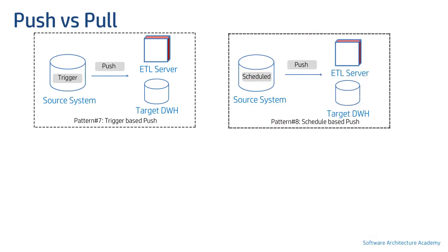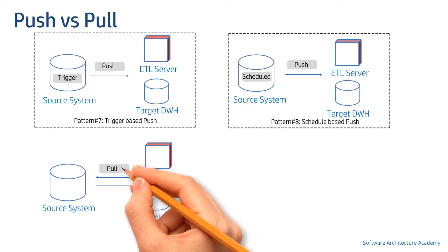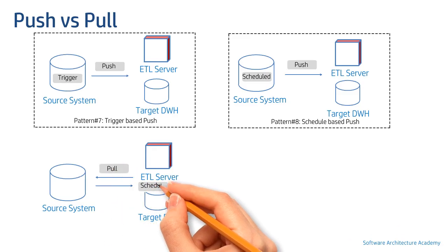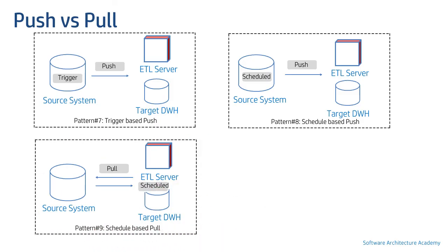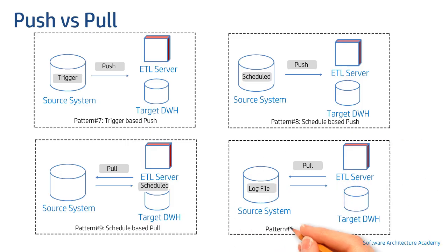A pull is initiated from the ETL server or a target data warehouse. It can be initiated by two means: first, scheduled as per the previous example, and second, based on log file tailing. In this pattern, a process tails a log file located on a source system and looks for specific actions or keywords. When those actions or keywords are encountered, a data pull is then initiated. These would be our final patterns, pattern 9 and 10.